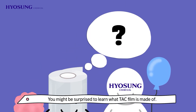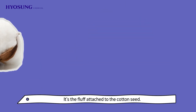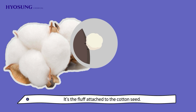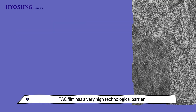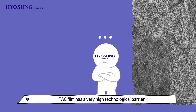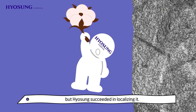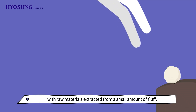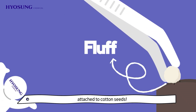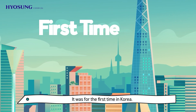You might be surprised to learn what TAC film is made of — it's the fluff attached to the cotton seed. TAC film has a very high technological barrier. But Hyosung succeeded in localizing it, with raw materials extracted from a small amount of fluff attached to cotton seeds. It was for the first time in Korea.